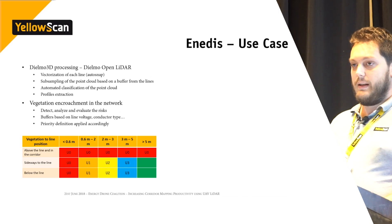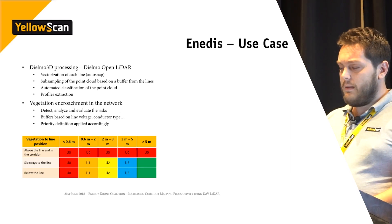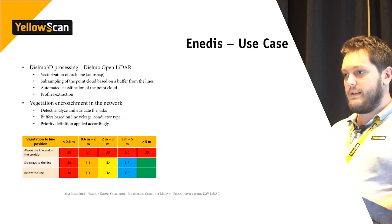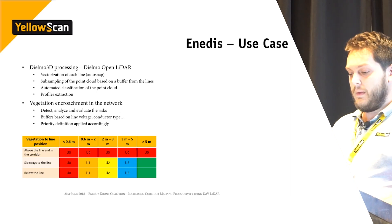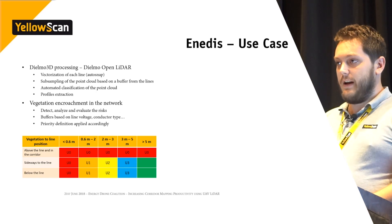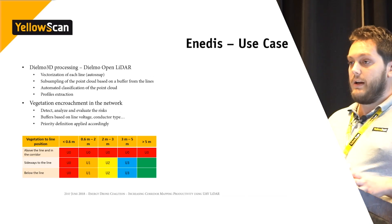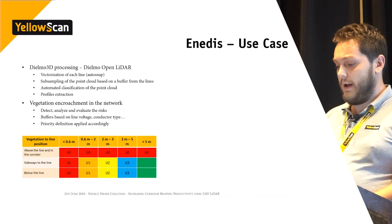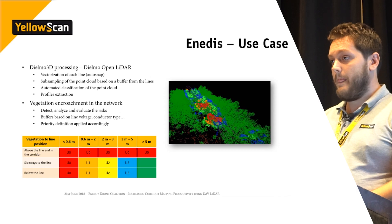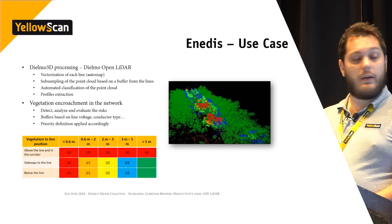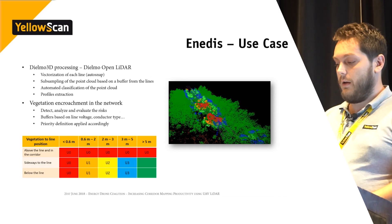The first result provided was vegetation encroachment. You want to detect and analyze risks around your power line based on voltage. Enidus defined a chart of the distance to the power line depending on the situation of surrounding vegetation. They produced a global mapping and a color-coded point cloud based on the risks the vegetation posed relative to the power line.